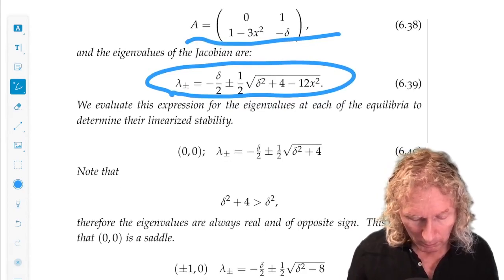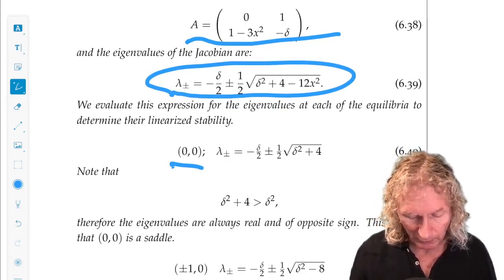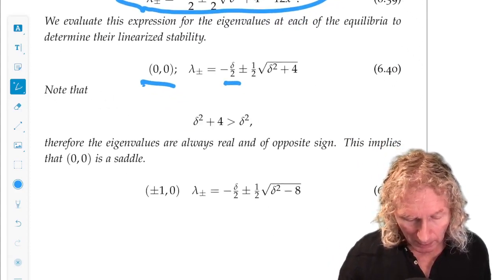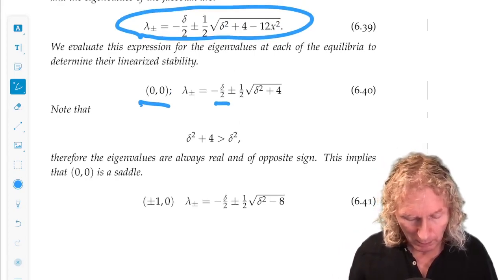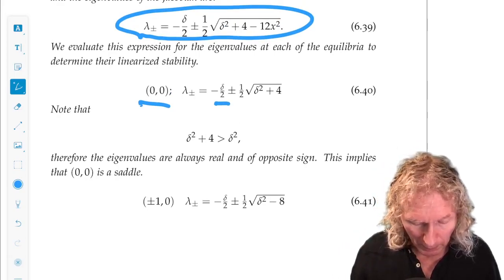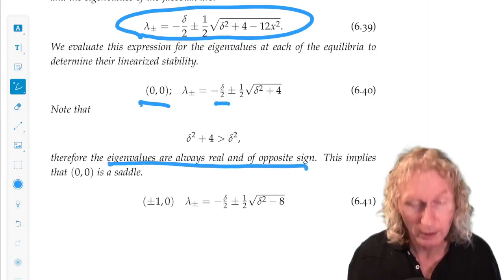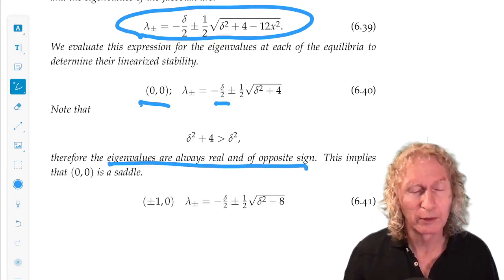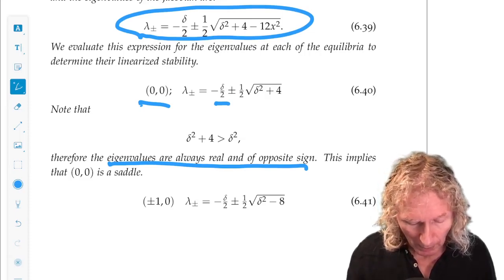So the origin, the eigenvalues are given by this expression. Notice minus delta over two. And a little bit of thinking in algebra, it's not hard to see that the eigenvalues of the origin are always real and opposite sign. So this implies that the origin is a saddle, regardless of the value of delta.